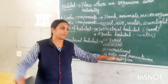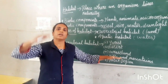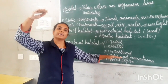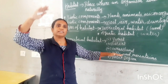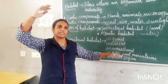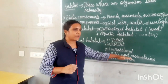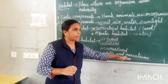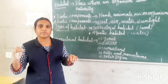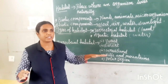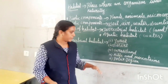Next is hills and mountains. They are higher in altitude, meaning high above sea level. Animals found in this mountain region include mountain goat, sheep, and yak.